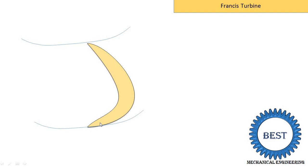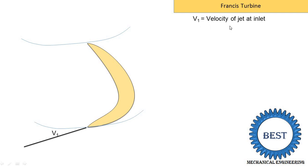This is one vane of a runner of the Francis Turbine. In the Francis Turbine, there are 16 to 24 vanes. For drawing a velocity triangle, we are only considering one vane. This vane is moving with the velocity U. Now, the water jet with the velocity V1 strikes tangentially to one end of the vane at the inlet. V1 means velocity of the jet at the inlet. The angle of the water inlet to the runner is alpha 1 — meaning water coming out from the guide vane to the runner at a certain angle, and this angle is known as alpha 1.